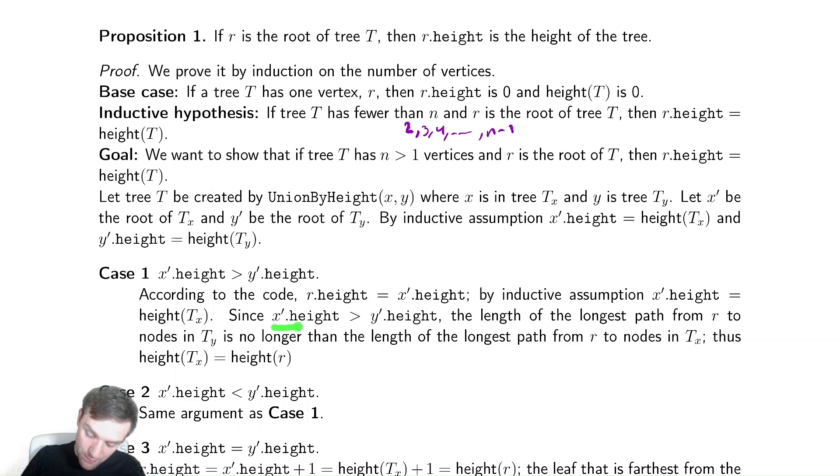And because x was bigger than y, we know that when we add that additional edge going from y prime to x prime, that the height of y prime plus one cannot be greater than x prime dot height. The longest path from x prime to any node in ty would be at most y prime dot height plus one, or the height of ty plus one, which by assumption of this case cannot be bigger than x prime dot height. Therefore r dot height doesn't change and height of r does not change.